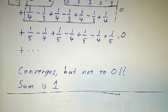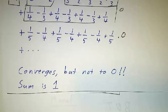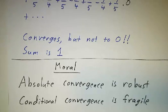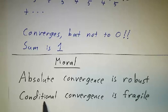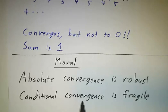It turns out that by rearranging the order of the terms, you can get any number you want as the answer, or you can get it to diverge to infinity, diverge to minus infinity, or oscillate and not converge to anything at all. The moral of the story: if you have an absolutely convergent series, that's robust — you can rearrange terms as much as you like. It's unambiguous: there's a certain amount of positive stuff, a certain amount of negative stuff, a certain total. But if you have something conditionally convergent, you've got an infinite amount of positive stuff and an infinite amount of negative stuff, and it only converged due to a delicate balance between them. Change the order, you mess up the balance, and all sorts of crazy things can happen.